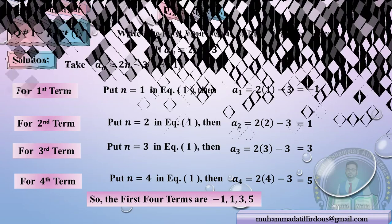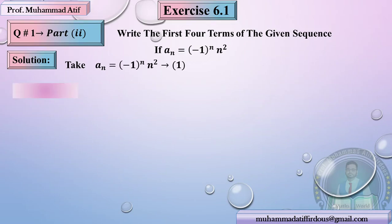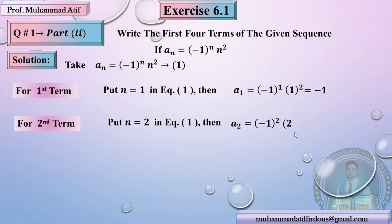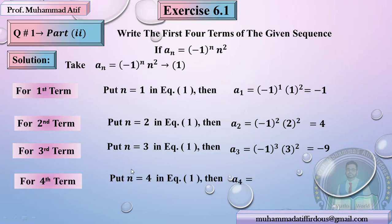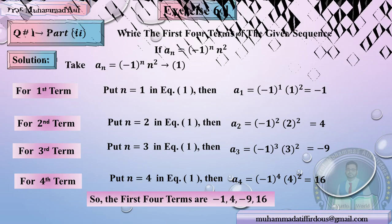For practice, let's do Question 1, Part 2: Write the first four terms. The equation has changed. For the first term, put n = 1: (−1)^1 × 1² = −1 × 1 = −1. For the second term, put n = 2: (−1)^2 × 2² = 1 × 4 = 4. For the third term, n = 3: (−1)^3 × 3² = −9. For the fourth term, n = 4: (−1)^4 = positive 1, and 4² = 16. So the first four terms are: −1, 4, −9, and 16.